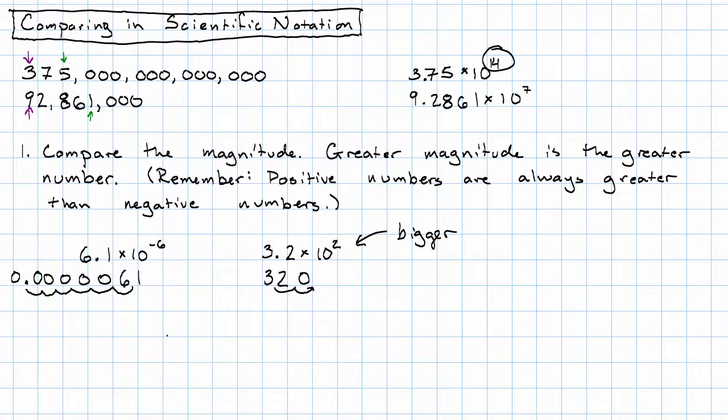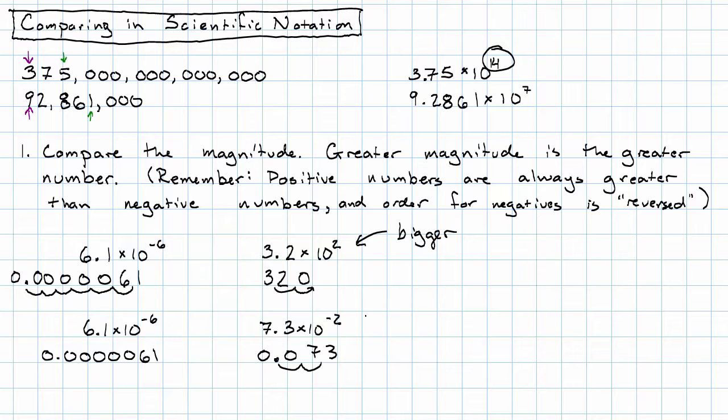And we can get into a little bit of trouble if we don't remember our ordering for negative numbers, right? If I had my 6.1 times 10 to the negative 6 again versus 7.3 times 10 to the negative 2, right, this stays the same in decimal notation. This one, 7, 3, move the decimal point two places to the left. Again, it's really easy to see that this is the bigger number, and negative 2 is still greater than negative 6.